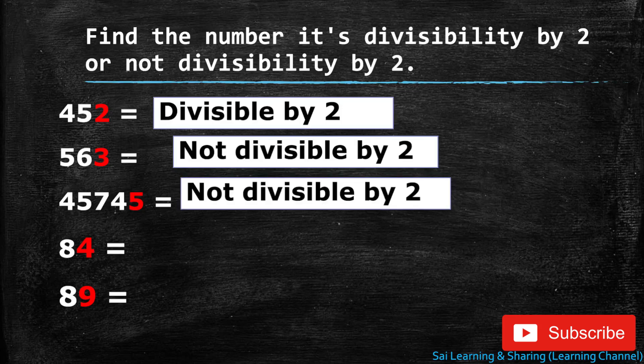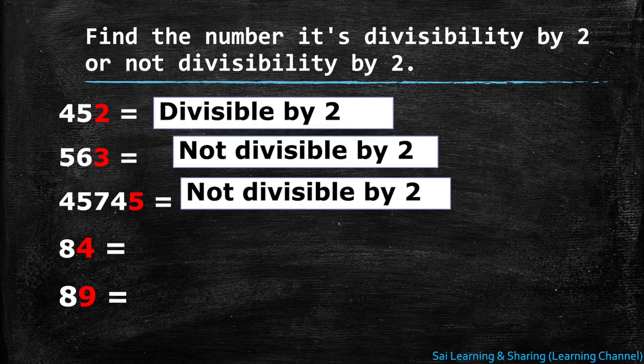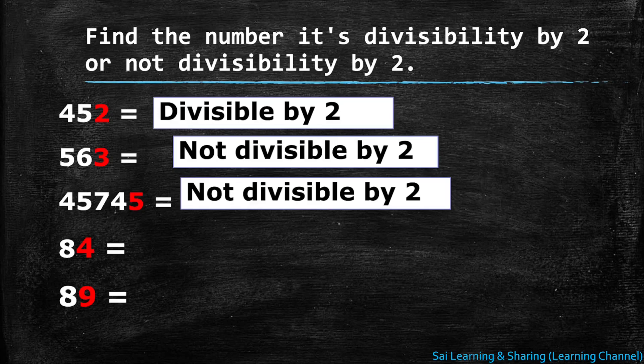84 - in the one's place it is written 4. Hence 4 is an even number, it is divisible by two.